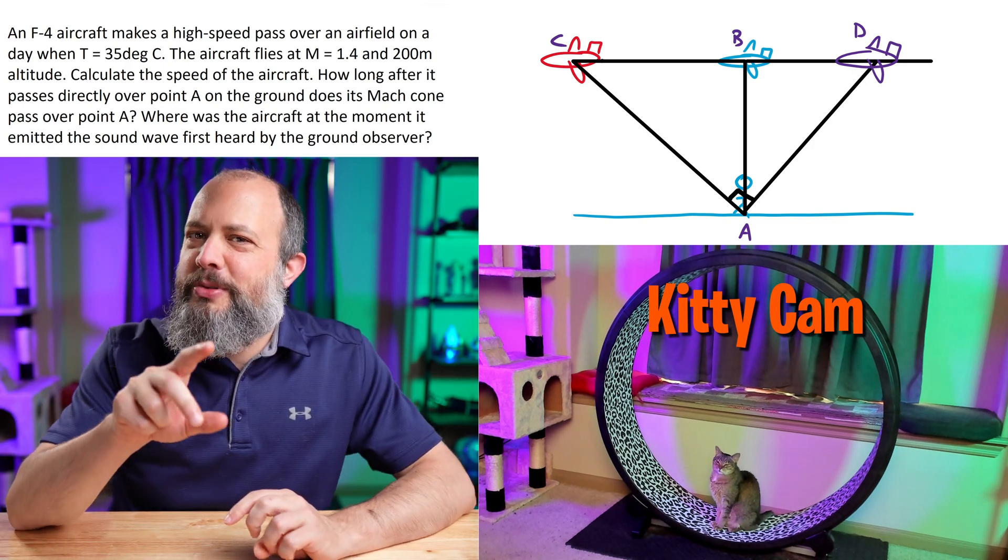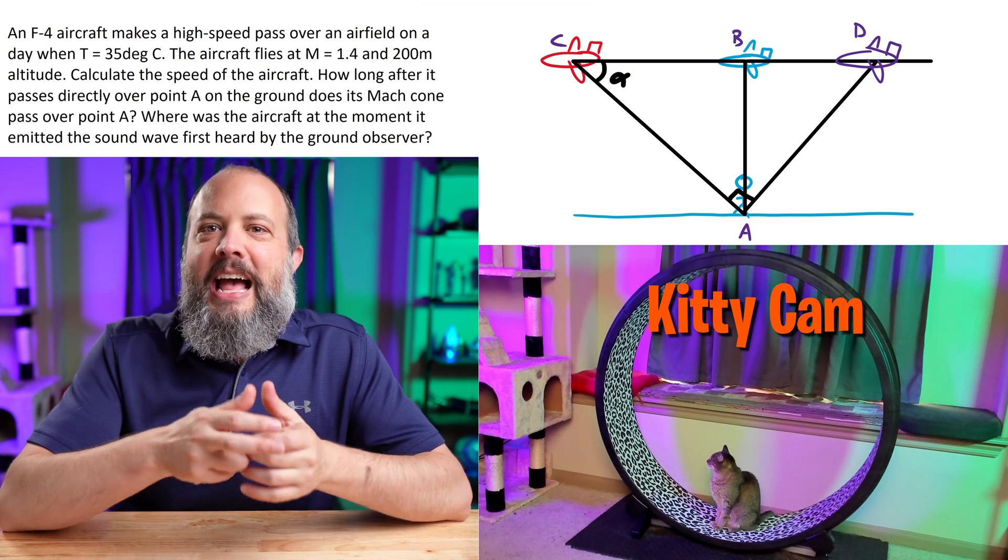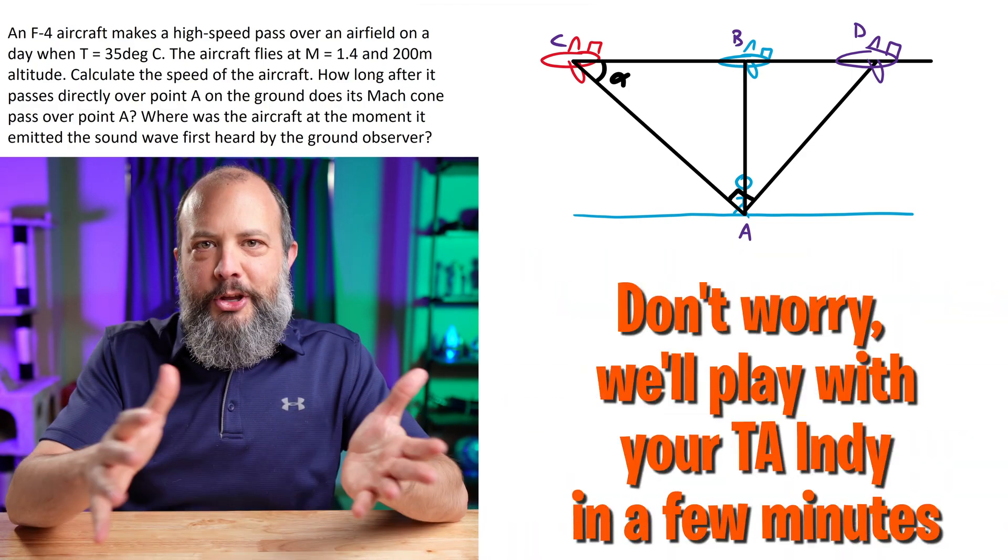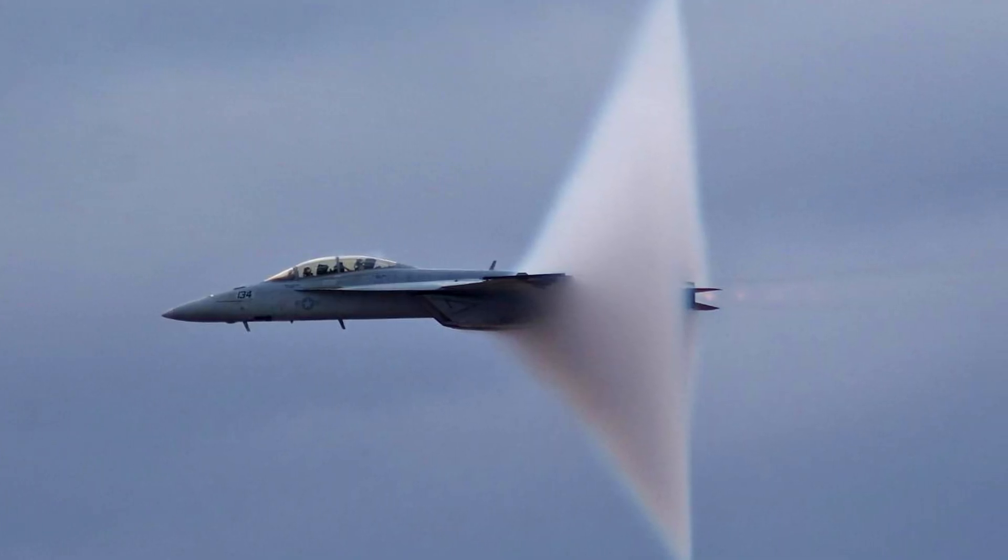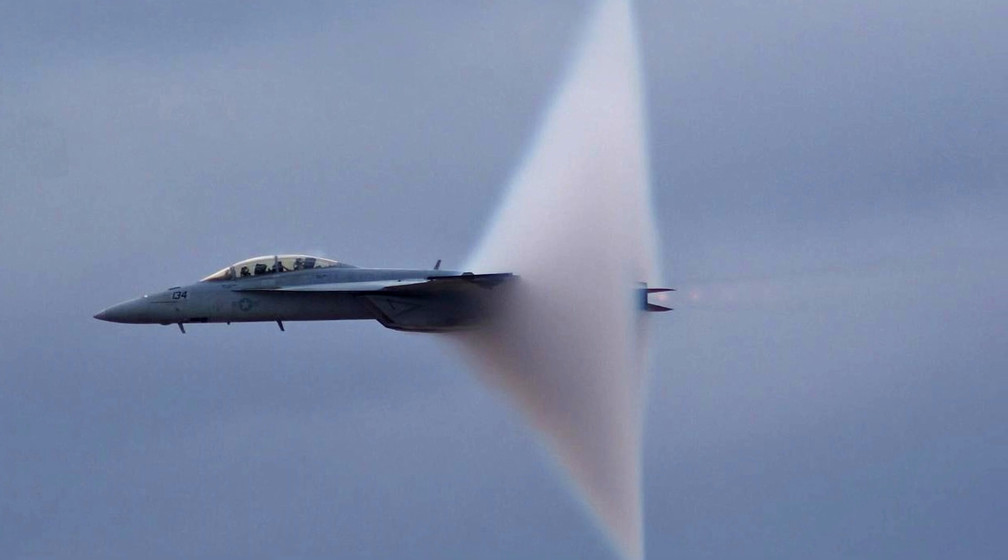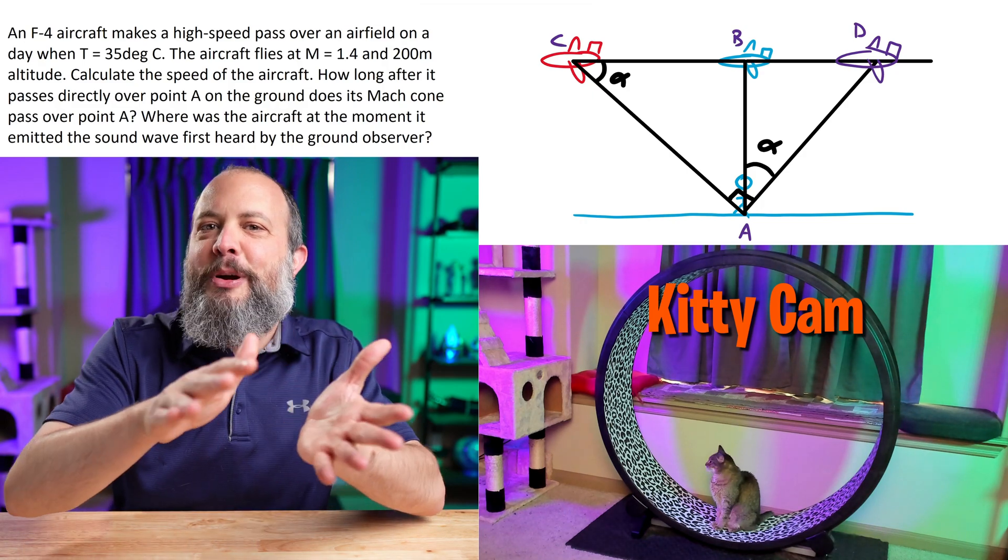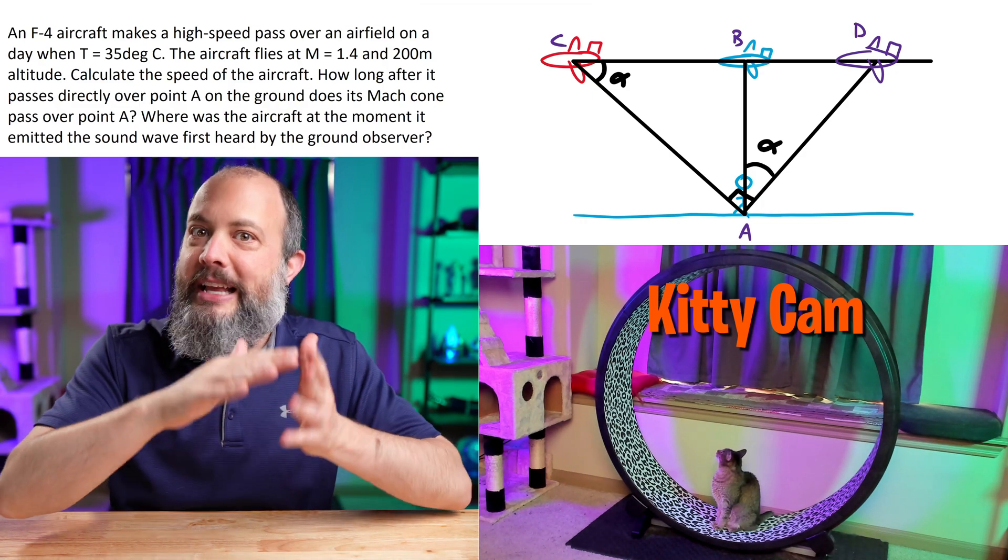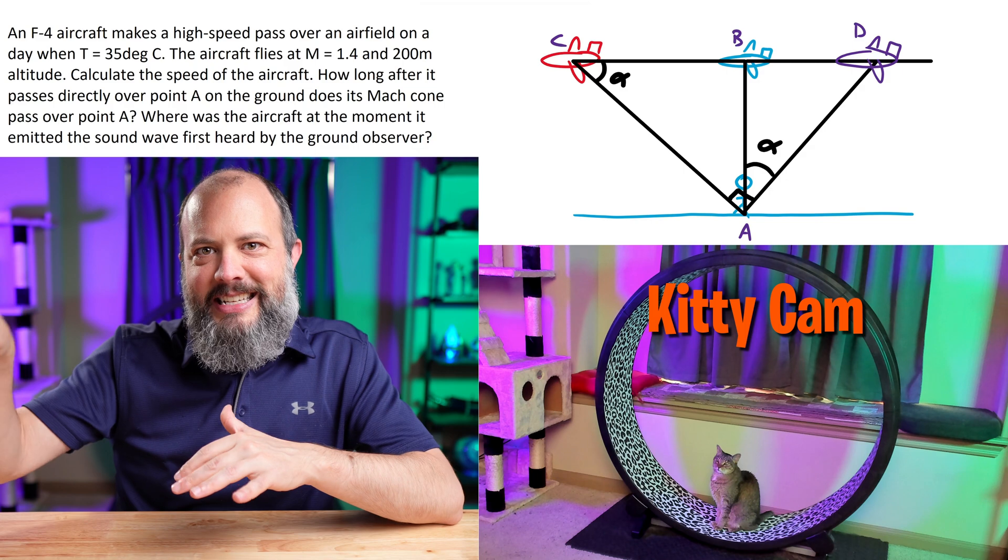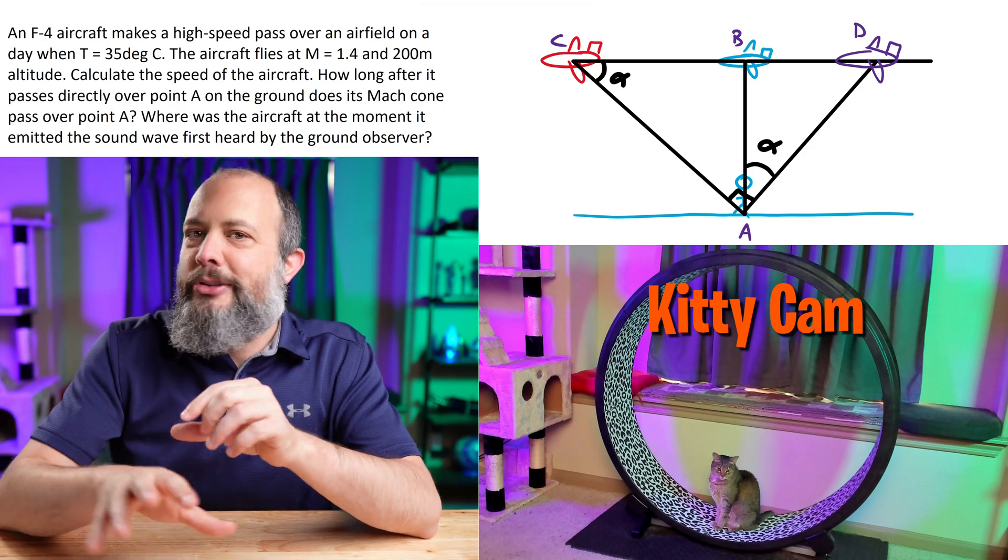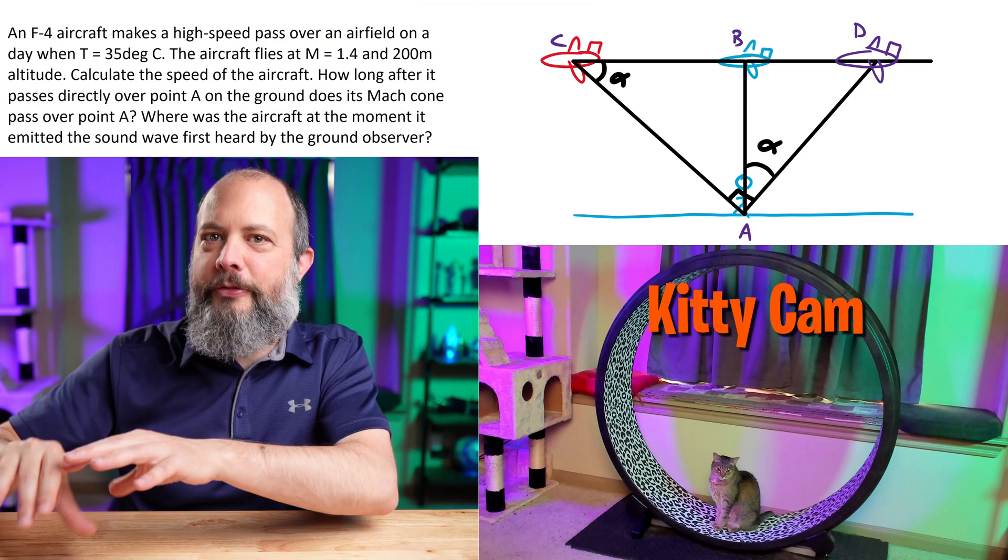This is generally what most Mach cone drawings are going to look like. You're going to be interested in the point straight overhead, some point in the future which helps you define the shape of the Mach cone, and then a point back in the past which represents where the plane was when it emitted the sound that you actually hear. Let me add a couple of angles. This angle alpha is the half angle of the Mach cone. The Mach cone actually goes in every direction, it's a full three-dimensional cone. The angle from C to A to D is 90 degrees.